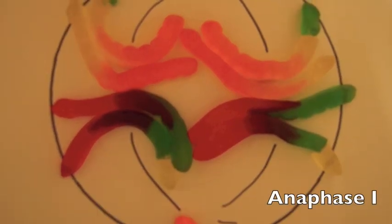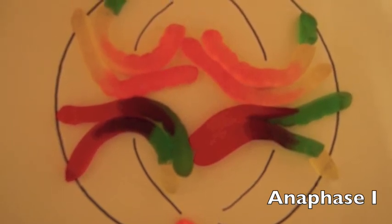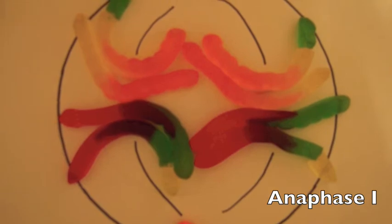Anaphase I comes next. In anaphase I, each pair of homologous chromosomes separates, detaches from the spindle fibers, and moves away from each other on the metaphase plate.